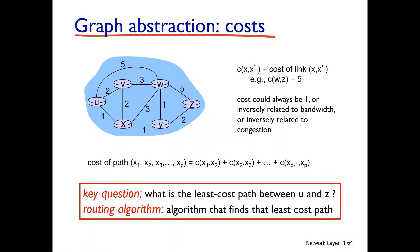The graphical representation includes link costs. The cost of a link is denoted C(x, x'). For example, C(W, Z) equals 5, meaning the link cost between W and Z is 5. In a networking system, the link cost is determined by factors such as traffic, congestion, and bandwidth.